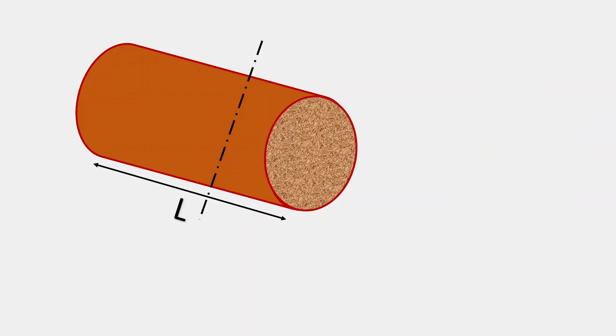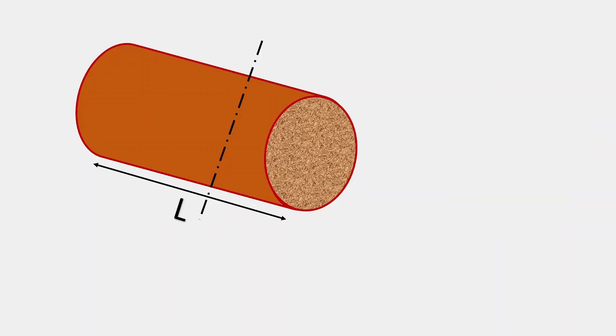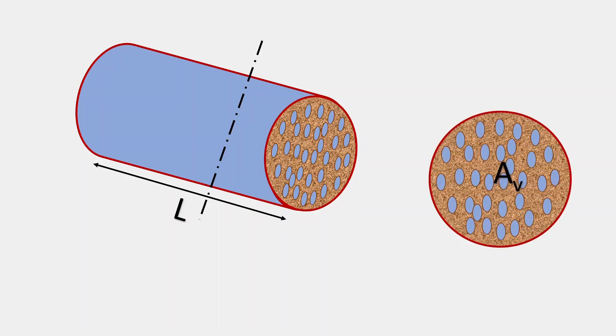But in case of soil, if we consider such a cylindrical volume, water passes through only the void spaces. The cross section area through which the flow happens is only the area of void spaces in the given cross section.